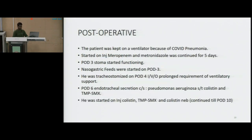Postoperatively, the patient was kept on ventilator because of COVID pneumonia. Looking at the bowel gangrene and the lung condition, he was put on injection meropenem. When the stoma started functioning on POD3, he was started on nasogastric tube feeding on POD3, and the antibiotics were continued while the abdominal drains were removed. A tracheostomy was done on POD4 because of the requirement of prolonged ventilator support. However, he started to develop fever on POD6, for which cultures were sent, and the endotracheal secretion culture grew Pseudomonas aeruginosa, sensitive to colistin and trimethoprim-sulfamethoxazole.